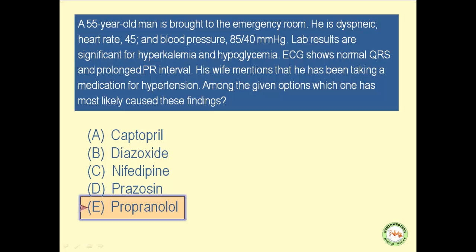How does propranolol increase the PR period on the ECG? The PR period represents the time for the spread of electrical discharges through the conductive pathways of the heart. Given that the AV node has the slowest conductive velocity, the length of the PR is for the most part due to the passage of discharges through the AV node. Beta-1 stimulation has a positive dromotropic effect and shortens the PR period. Inhibition of beta-1 receptors by all beta-blockers, including propranolol, increases the PR period.